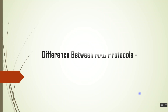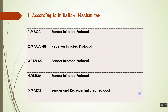First of all, we will do a comparison based on initiation mechanism. MACA is a sender-initiated protocol. MACA-BI is a receiver-initiated protocol. PAMAS is also a sender-initiated protocol. DBTMA is also a sender-initiated protocol. MARCH is both sender and receiver initiated — we will see more about MARCH later.